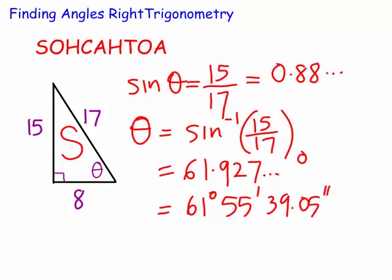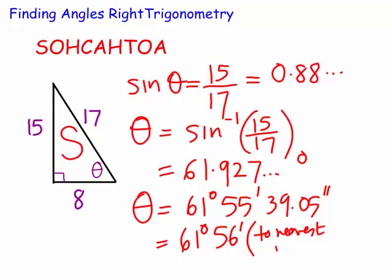So this is the angle theta. You can see here that obviously this is fairly accurate. We normally would, to the nearest degree, round that 55 up to say 62 degrees. To the nearest minute, it would be 61 degrees, 56 minutes. So let's actually write it 61 degrees, 56 minutes. This is to the nearest minute.